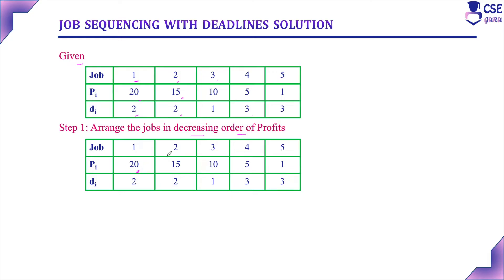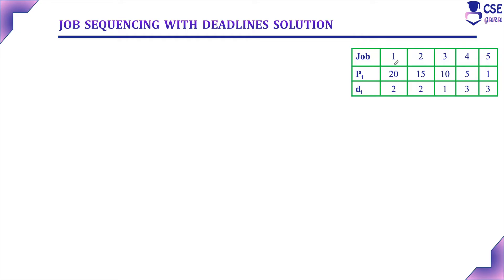Job 1 has the maximum profit of 20, followed by job 2 with profit 15, job 3 with profit 10, job 4 with profit 5, and job 5 with profit 1. Now consider each job: if a particular job can be completed within its deadline, add it to the job subset. Otherwise, neglect that job.